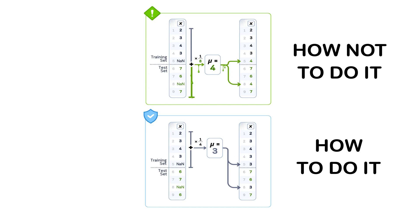The right approach is simple but strict. Split your data first, then pre-process train, validation, and test sets separately. Your validation and test sets should be completely untouched until their specific evaluation phase.